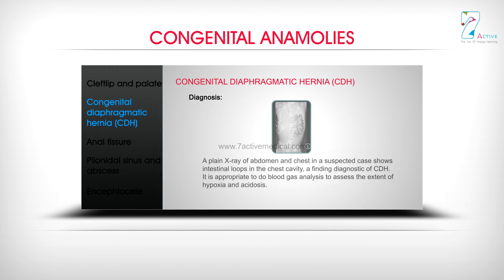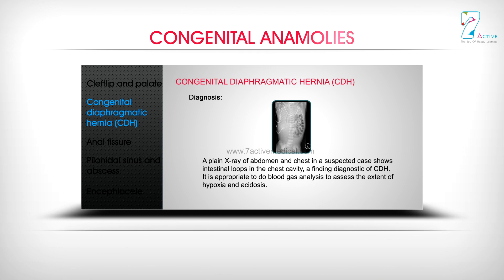Diagnosis: A plain X-ray of the abdomen and chest in a suspected case shows intestinal loops in the chest cavity, a finding diagnostic of CDH. It is appropriate to perform blood gas analysis to assess the extent of hypoxia and acidosis.